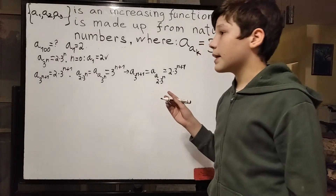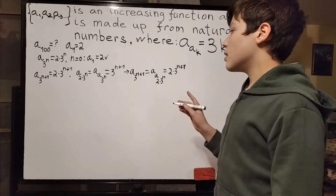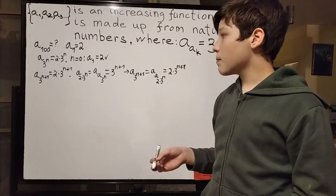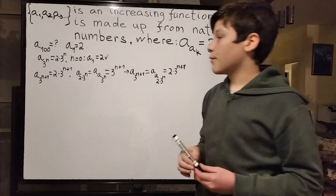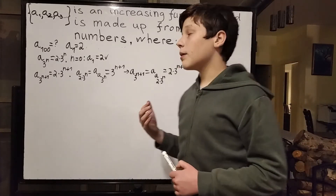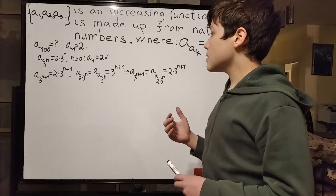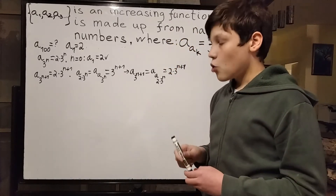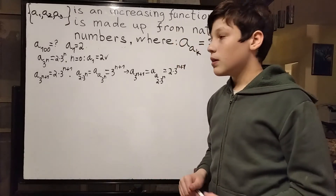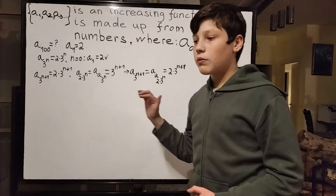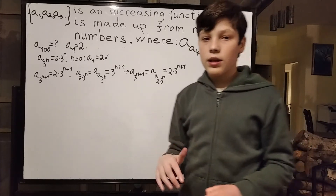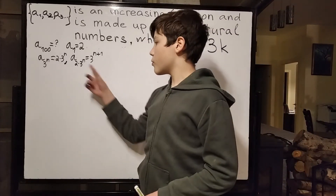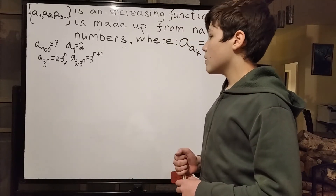Meaning that we finished our proof by induction, and we found out that this is always true when n is a non-negative integer. Another thing that came from that — which we used in the middle of our proof — is that a of 2 times 3 to the n is equal to 3 to the n plus 1, which directly comes from what we just proved. Let's clear the board and finish this proof up.